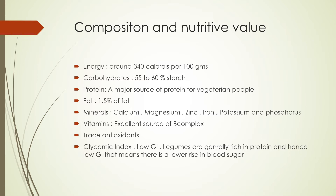Moving on to protein — pulses are basically a major source of protein for vegetarian people. Make sure that whenever you're making a vegetarian diet plan, you incorporate a good amount of pulses. About 20 to 25 percent of pulses is protein, and it is chiefly described as globulins. You can read more about globulins to understand why they are so important.